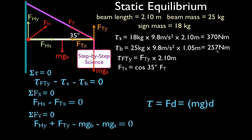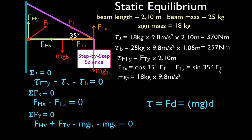For the x and y components of the tension force, we know the angle. The x component is adjacent to the angle, so FTX equals cosine of 35 degrees times the tension force. The y component is opposite the angle, so FTY equals sine of 35 degrees times the tension force. The weight forces are simply mg: 18 kilograms for the sign and 25 kilograms for the beam.